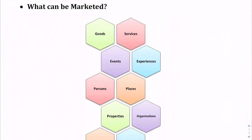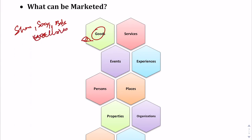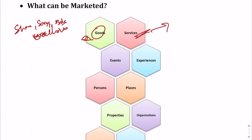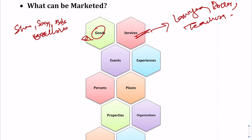Now, what can be marketed? First, goods — we see a variety of ads on television for goods like shampoos, soaps, biscuits, eateries, and so on. Next, services — lawyers, doctors, teachers all provide services, and they also need to market themselves, identifying their target consumers and letting them know they can fulfill their needs.